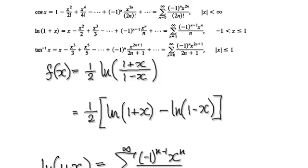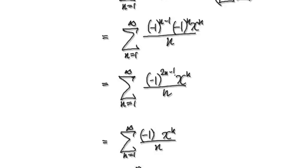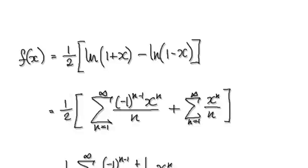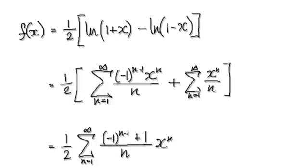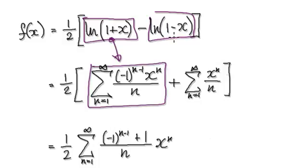Following on from the previous video, we got to this stage here, where we can write our function as being one block, take away this block, where this block here can be rewritten as this, and then this block here can be rewritten as this.